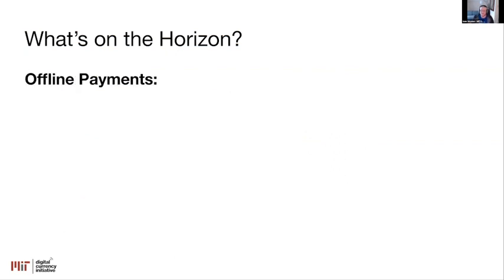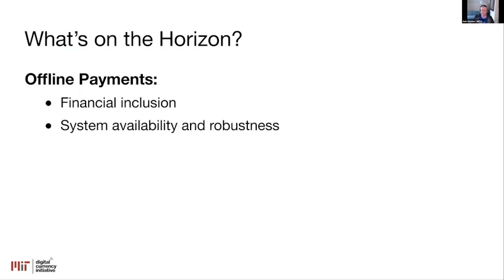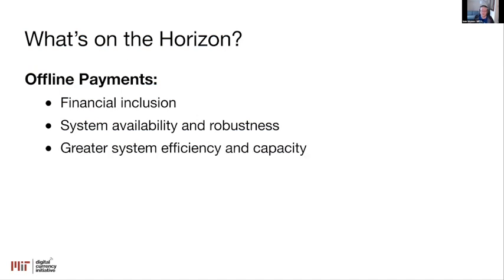The second really fundamental aspect of CBDCs is offline payments. This is one of the most important aspects for financial inclusion — as soon as you include a requirement for someone to be online in order to send money, you've dramatically raised the barriers necessary for people to actually use the system. But beyond financial inclusion, this has significant benefits for the system itself. The availability of the system matters less if you can transact even while the system is down or unavailable, giving much better robustness guarantees. Furthermore, you can imagine the system being more efficient: if you don't need to send messages to a transaction processor every time you want to send money, that processor can run faster and serve more transactions per second.